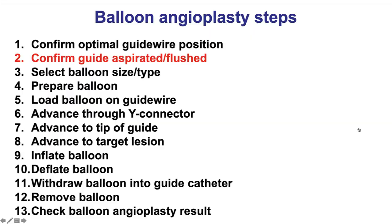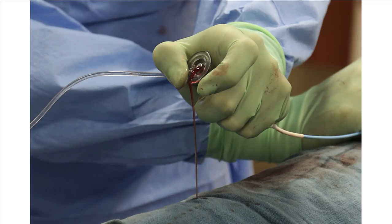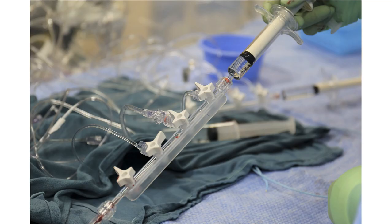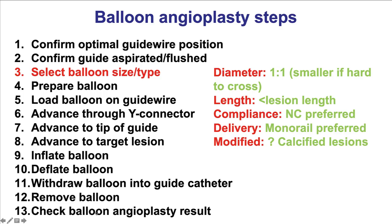The second step is to confirm that the guide is aspirated and flushed. Usually there is back bleeding before inserting the balloon; there is aspiration of the guide catheter before it is refilled with contrast. One wants to ensure that the manifold is clean and there is no air anywhere in the guide or the manifold.